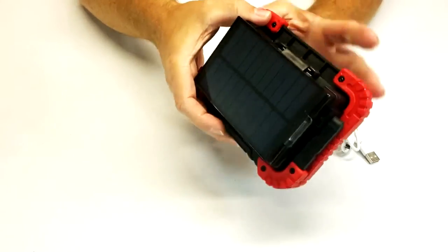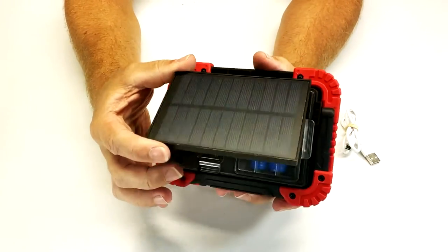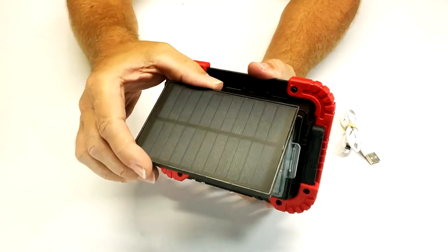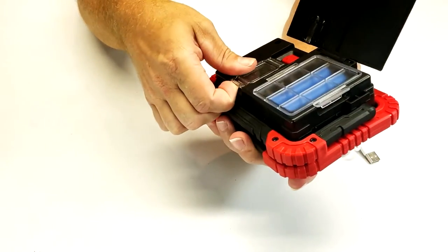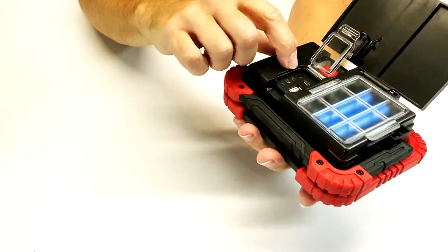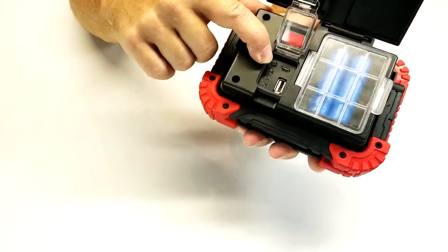On the back, you're going to have a solar panel. The solar panel can detach from the device, and you're going to plug it into the micro USB port.